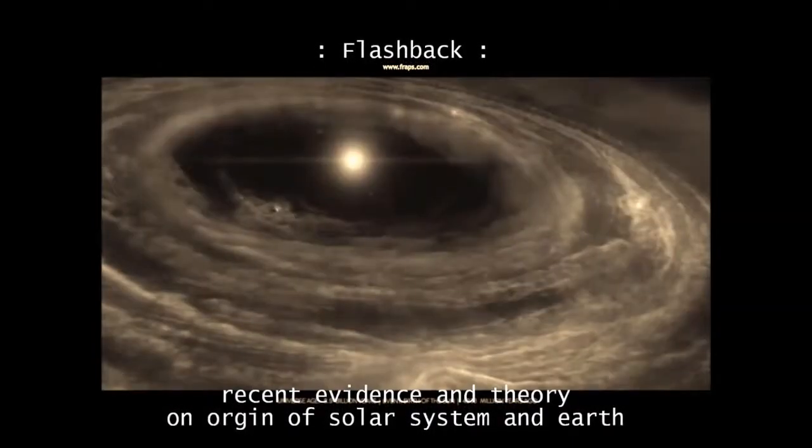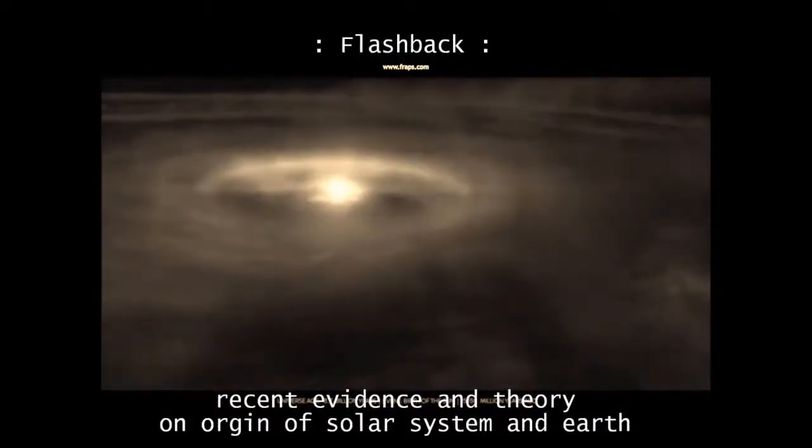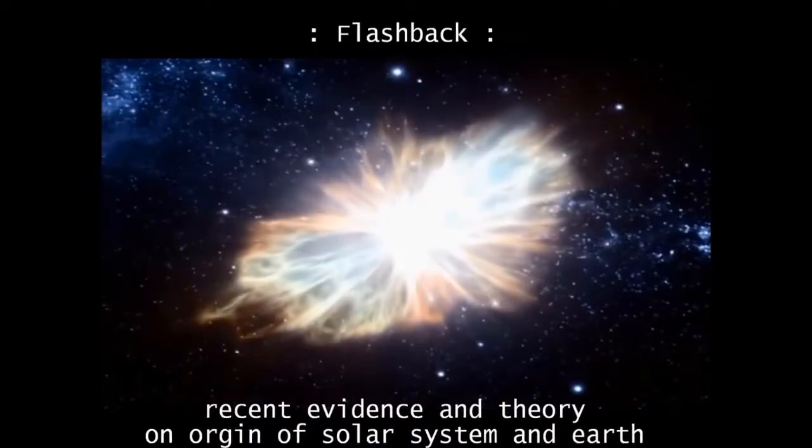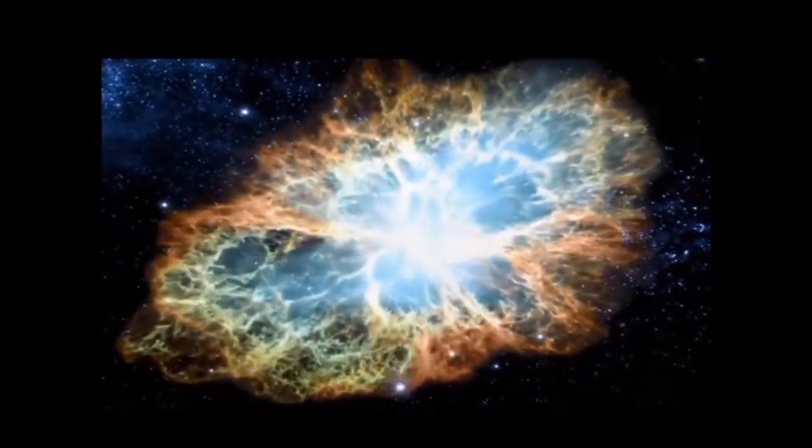Recent evidence and theory on the origin of the solar system and Earth: a flashback. Our solar system, 4.5 billion years ago, and at the center, the young Sun.